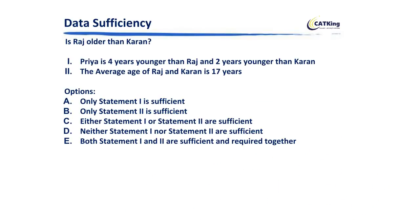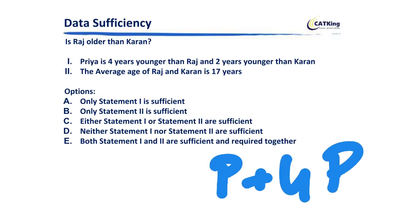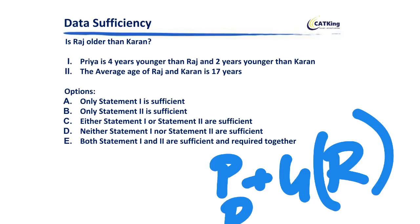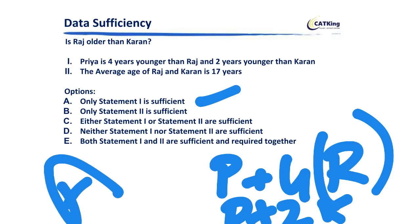This next question is based on age — a very common type. The question is: is Raj older than Karan? Statement one says Priya is four years younger than Raj and two years younger than Karan. So Priya's age plus four years gives Raj's age, and Priya's age plus two years gives Karan's age. Clearly Raj is older than Karan. Statement one is sufficient, so A can be the answer. Statement two says the average age of Raj and Karan is 17 years — from just an average, you cannot determine who is older. Statement two is not sufficient. The answer is A.